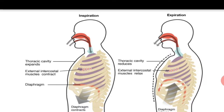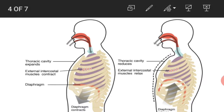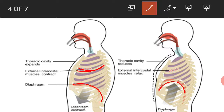The process of inspiration and expiration is shown with the help of a diagram. During inspiration, the rib muscles contract and the ribs are raised. At the same time, the dome-shaped diaphragm contracts and is lowered.